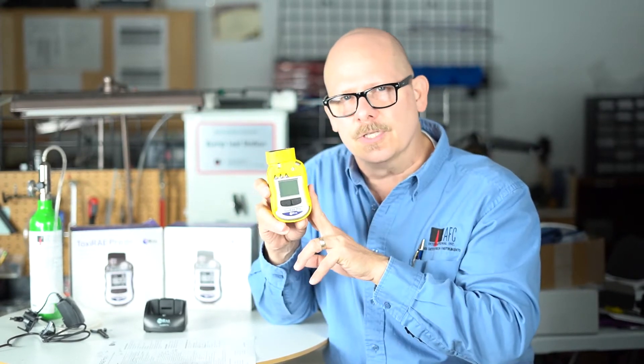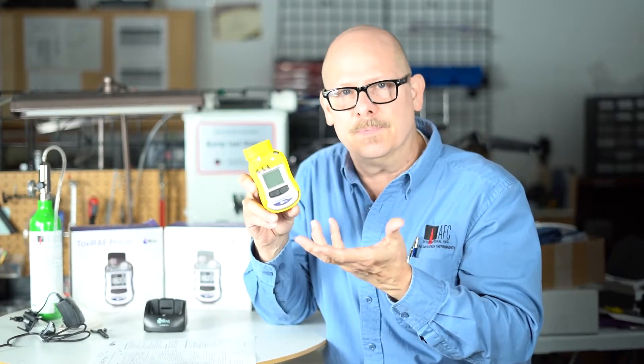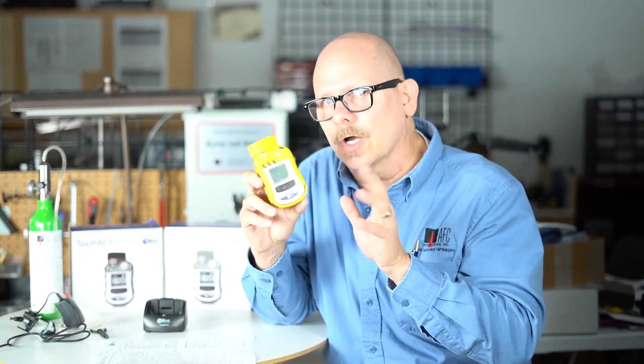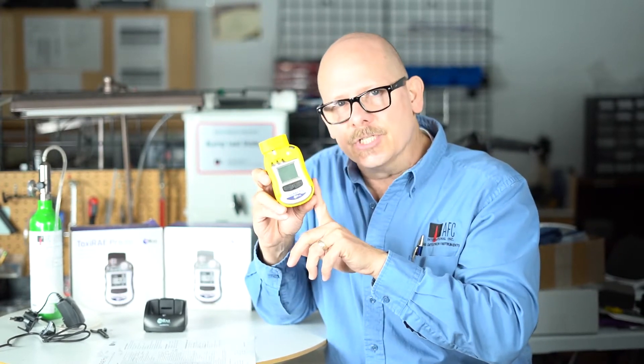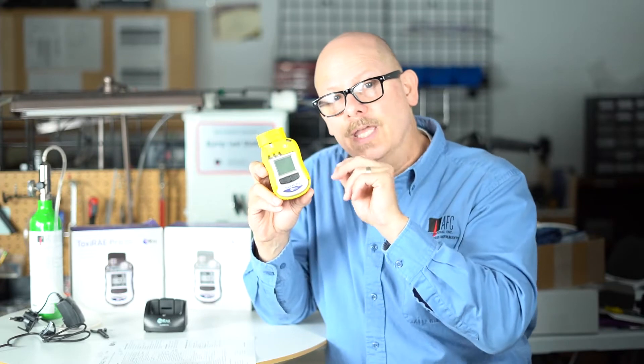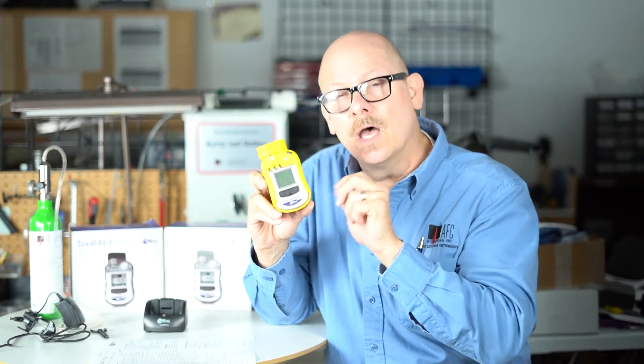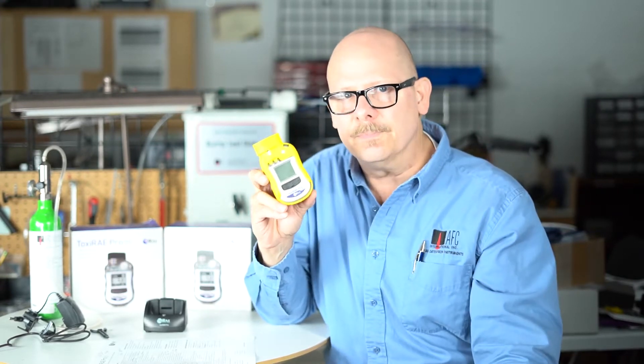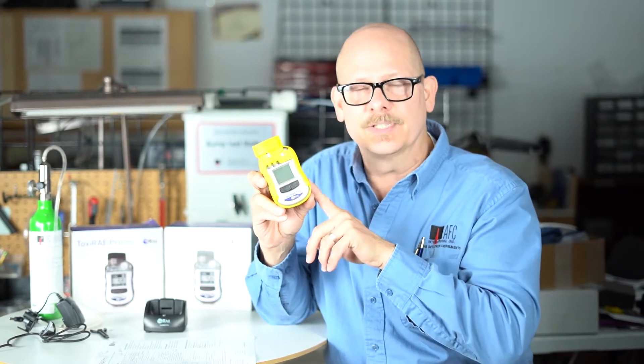There's the industrial standard unit, and that has a range between 1 to 1,000 ppm, and there's no data logger. The industrial hygiene version has a range of 0.01 all the way up to 2,000 ppm and has a full-time data logger.